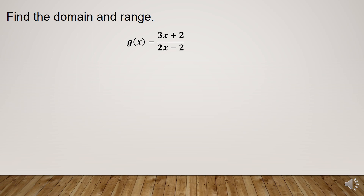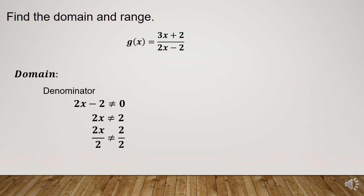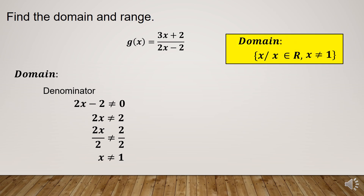Example: g(x) = (3x + 2) / (2x - 2). To find the domain, the denominator must not be equal to 0. So the restriction of x: 2x is not equal to 2. We transpose negative 2 to the other side, then divide both sides by 2. Therefore, x is not equal to 1. The domain is the set of x such that x is an element of the real numbers, but x must not be equal to 1.